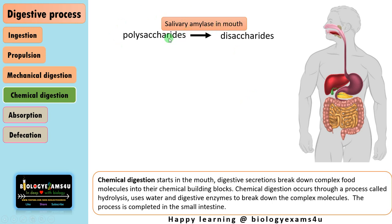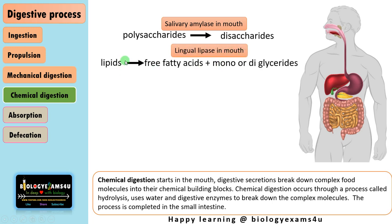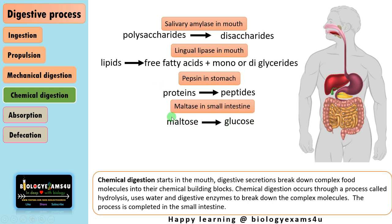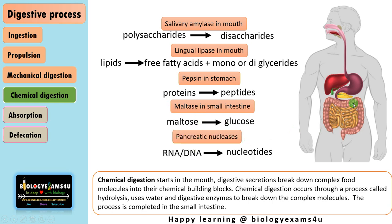Examples of chemical digestion: salivary amylase in the mouth converts polysaccharides like starch into disaccharides like maltose; lingual lipase converts lipids to free fatty acids and diglycerides; pepsin in the stomach converts proteins to small peptides; maltase in the small intestine converts disaccharide maltose to two glucose units; and pancreatic nucleases convert nucleic acids RNA or DNA into nucleotides. All these simple molecules can be easily absorbed by the body.